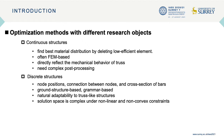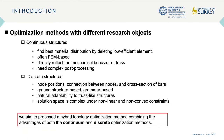There are two main types of methods for different research objects. For continual structures, it is to find the best material distribution by deleting low-efficiency elements, and it's often FEM-based and can directly reflect the mechanical behavior of a structure, though it needs complex post-processing. For discrete structures, it contains node positions, connections between nodes, and cross-sectional areas. The method often used is ground-structure-based or grammar-based, which has a natural ability to generate and select structures, though the solution space is complex under non-linear and non-convex constraints. Most of these methods essentially seek the optimal distribution of materials or layout of a structure within the design domain, but rarely are inter-connected.